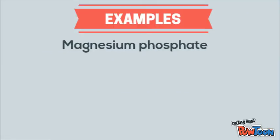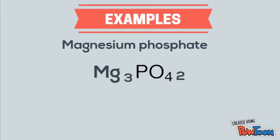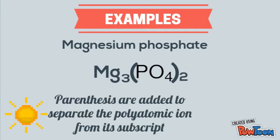Some more examples. Magnesium phosphate: Mg is a +2 charge. Look at your list — phosphate is PO₄ with a −3 charge. When you cross those two and get rid of the symbols, it's Mg₃(PO₄)₂. Don't forget to put your parentheses between the four and the two.